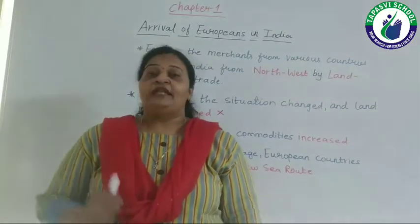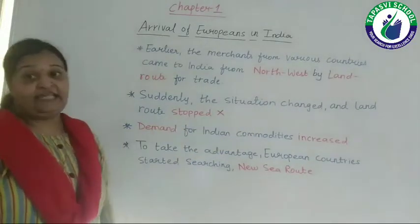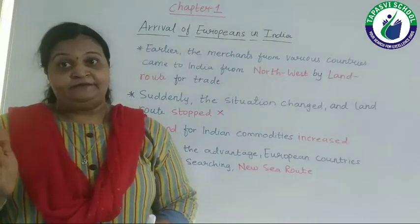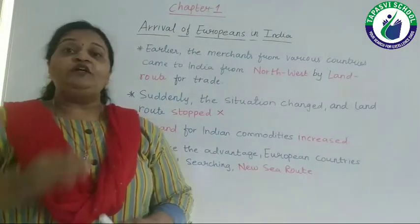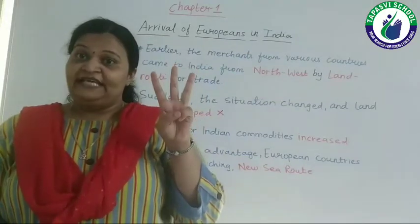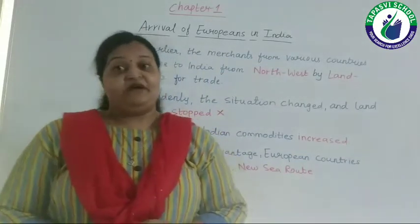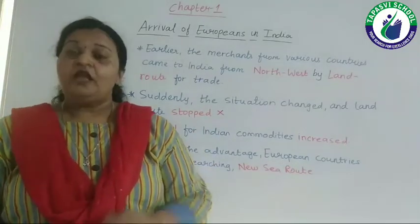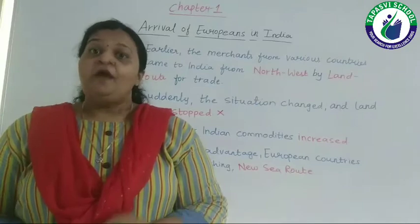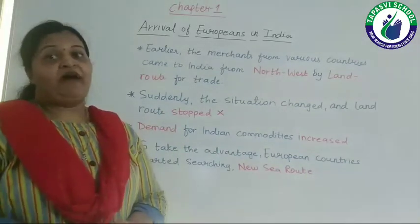As the trade relations stopped, consequently the demand of Indian commodities increased in the European markets. Europeans needed the commodities of India in great demand. What all was in demand? Indian spices, black pepper, muslin, silk, cotton cloth — all these were in great demand in the European nations. Europeans wanted to reach India anyhow because there was much demand of Indian commodities in European markets.